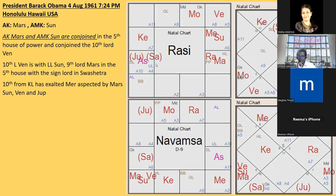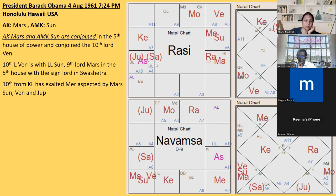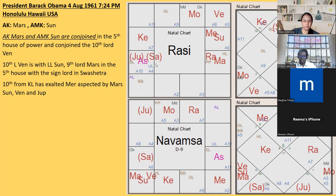In the Navamsa, there's a Vargottama lagna lord. Looking at the fifth house - see who is sitting there: ninth lord, tenth lord, all combined together. When the Atmakaraka and Amatyakaraka conjoin in Navamsa in certain houses, it creates one of the biggest yogas. He has AK and AMK with the tenth lord in the fifth house of power. Mercury is exalted, Saturn in Svakshetra, lagna lord is Vargottama. Without seeing the Navamsa, the Rasi chart alone would not even indicate an ordinary successful person - look at the Navamsa and the whole picture changes.